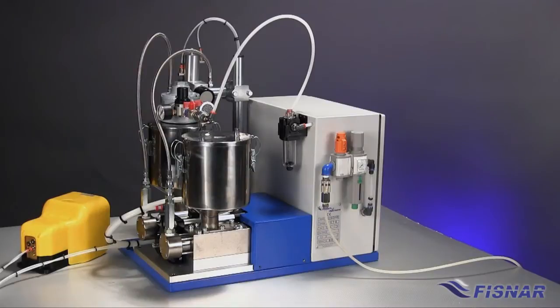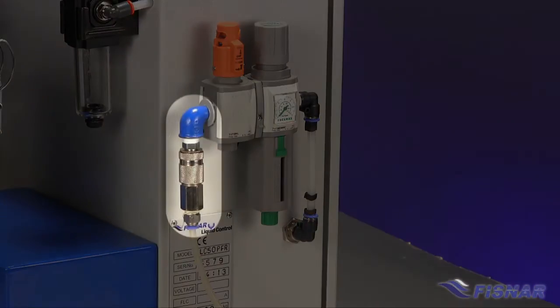The LC50PFR pneumatic model requires a clean dry air connection only. There is a female ¼-inch BSP connection at the rear of the machine for hookup to your clean dry air regulator.